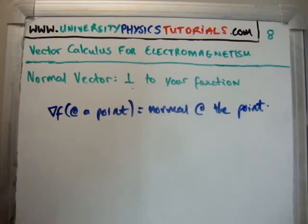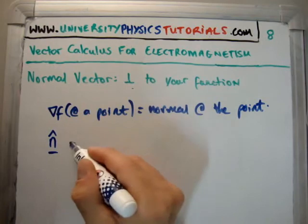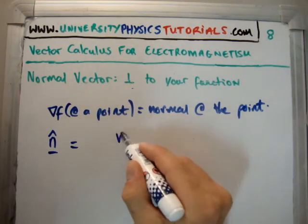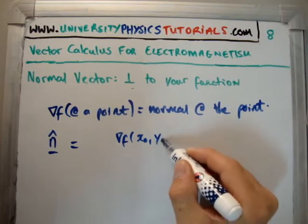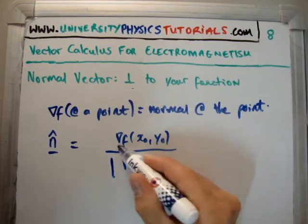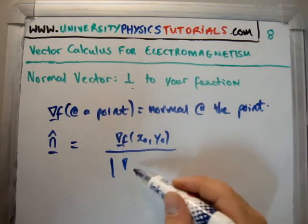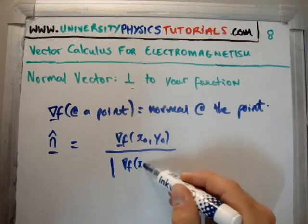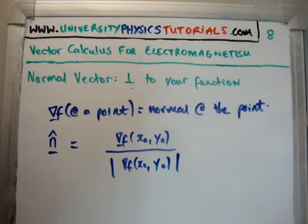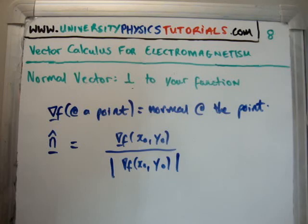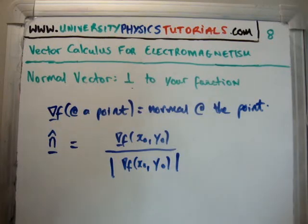So if you want to get n-hat, the unit normal, you take the gradient of your function at the point (x0, y0) and divide it by the magnitude of that gradient vector. That's your unit normal, and it gives you the direction of the normal vector. Thanks for watching — please pass it on to your friends, subscribe to my channel, and visit universityphysicstutorials.com.